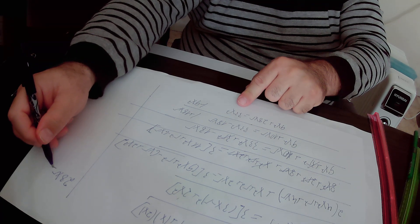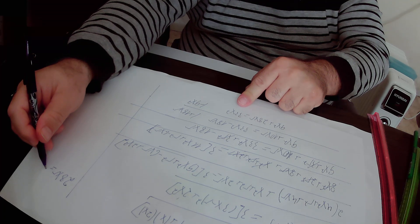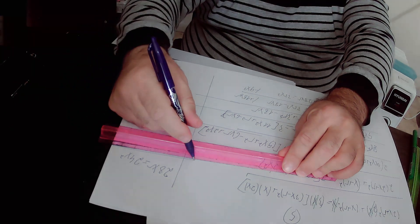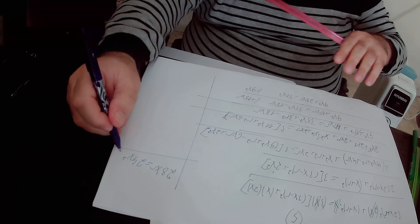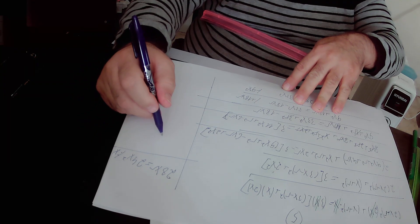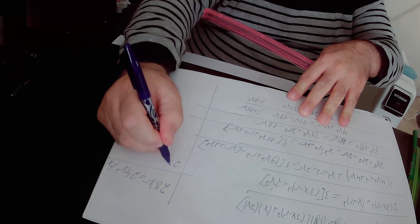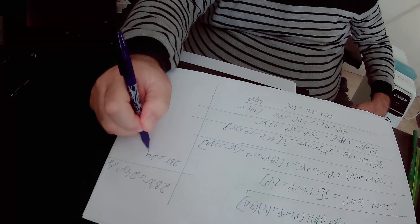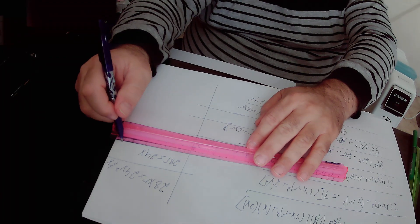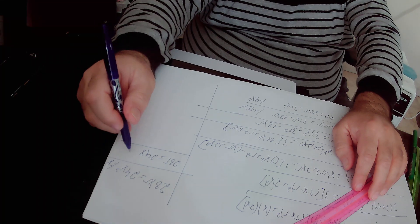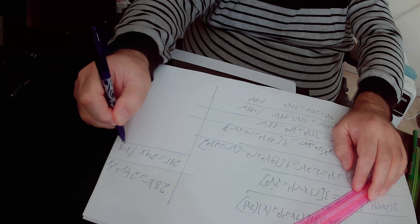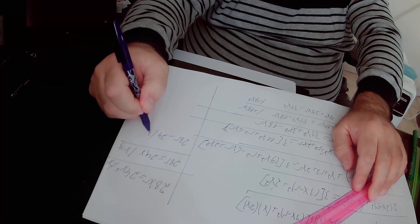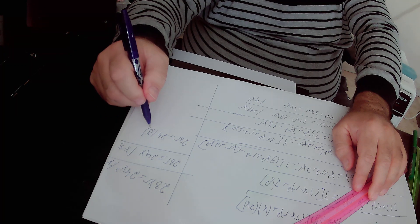After cancelling 3r squared from both sides, the equation becomes: 9x squared plus 10xr equals 33x squared minus 18xr. Adding 18xr to both sides gives 9x squared plus 28xr equals 33x squared.